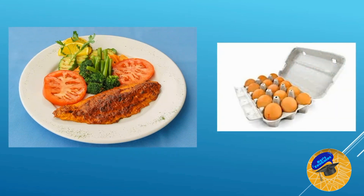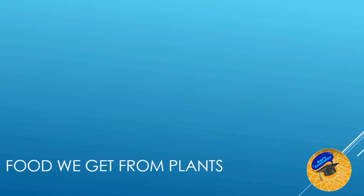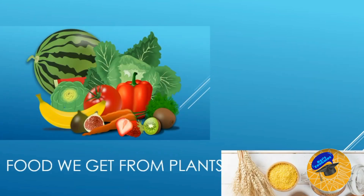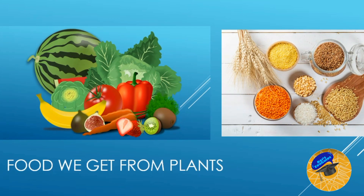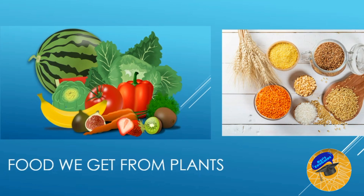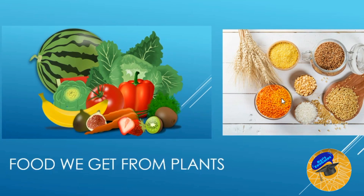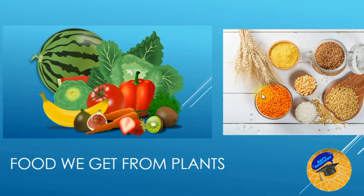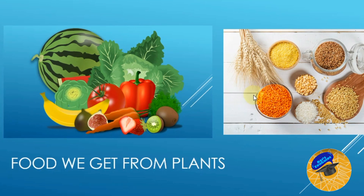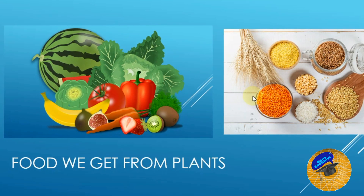Look at these pictures. Let's go through these pictures and think about that. These are the foods that we get from plants: fruits and vegetables, cereals and pulses. We get fruits, vegetables, cereals, and pulses from plants.